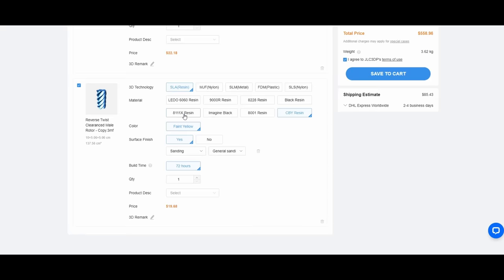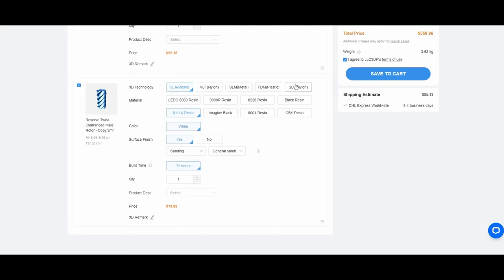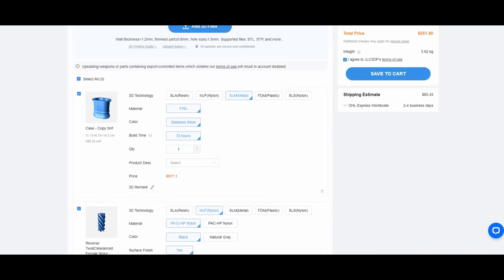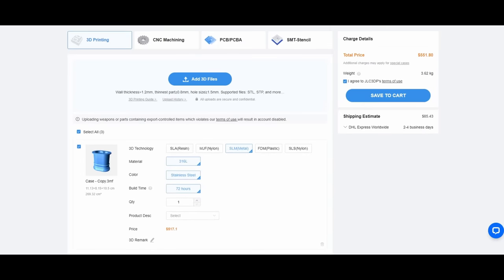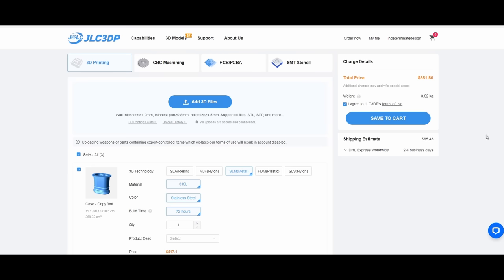Initially, I was planning on using the MJF nylon process, but JLC3DP reached out to me and they had just introduced a new high temperature resin for SLA, which is really perfect for this application. And in about 10 days, I had the parts on hand and they look absolutely beautiful and the accuracy is incredible and the surface finish is so much better than anything you can get with FDM 3D prints.